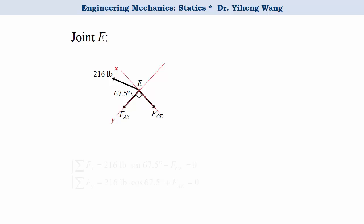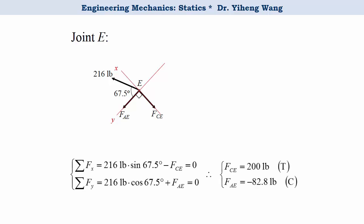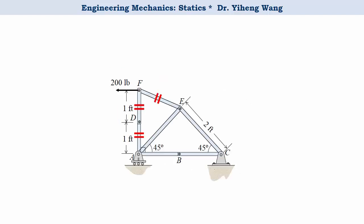And again, we write the two equations and solve for the unknowns. And now we know the forces acting at joint E. And we make another note for the truss members that have already been solved.